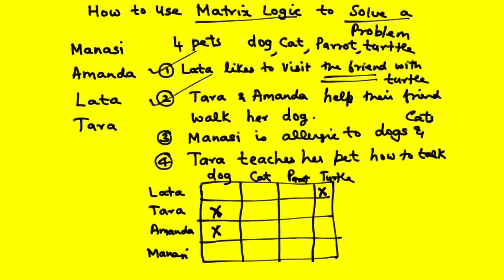Now put two crosses to show that Manasi cannot have a cat or a dog — Manasi is allergic to dogs and cats, so we put two crosses for her under dog and cat. Cross means it's not possible. Now by the process of elimination, we can see that Tara owns a dog and Latha owns a dog — actually, through elimination, Latha owns the dog.